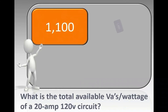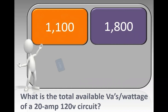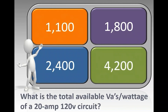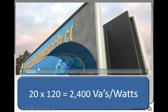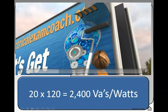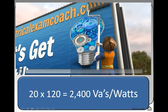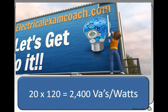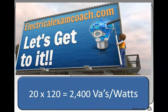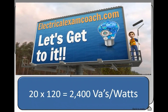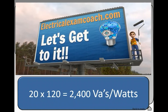What is the total available wattage of a 20-amp, 120-volt circuit? The correct answer is 2,400. We use simple math: amperage multiplied by voltage equals total VAs or total wattage. We take 20 multiplied by 120 and that equals 2,400.